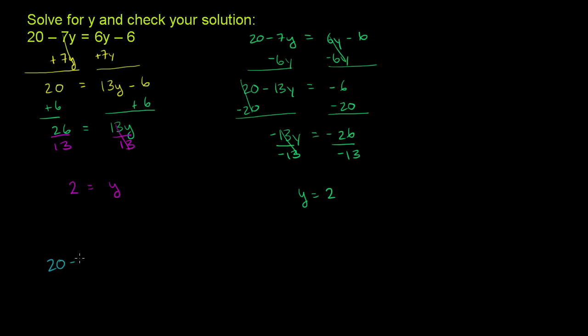So we have 20 minus 7. y is 2. So 7 times 2 should be equal to 6 times 2 minus 6. So this should be 20 minus 14. We want to do multiplication first, order of operations. So this is 20 minus 14 should be equal to 6 times 2 is 12 minus 6.